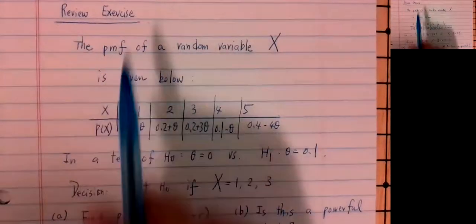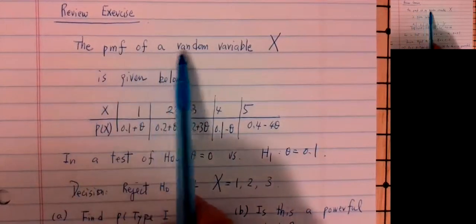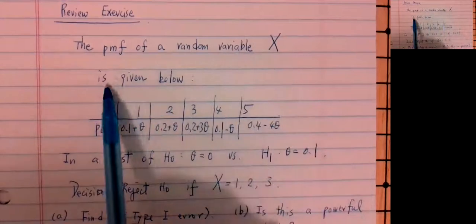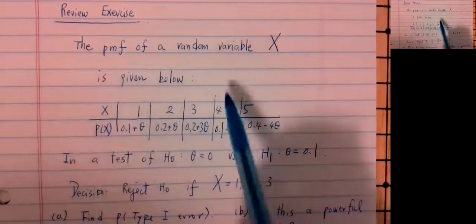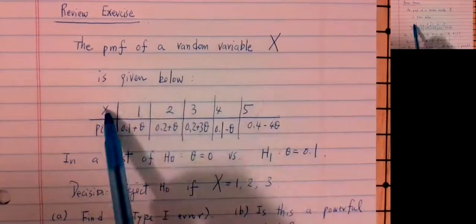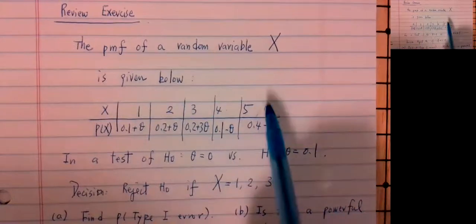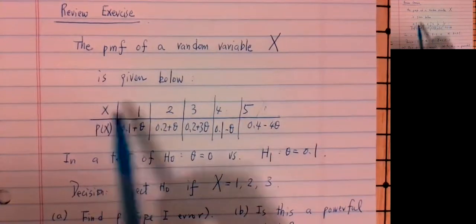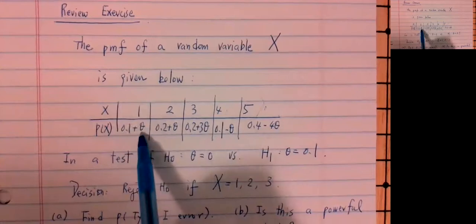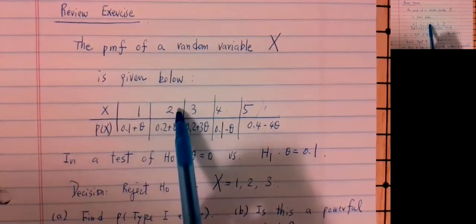Let's look at the review exercise. The probability mass function of a random variable X is given. The possible values of X are 1, 2, 3, 4, 5. The probability X equals 1 is 0.1 plus theta, probability X equals 2 is 0.2 plus theta, and so on and so forth.